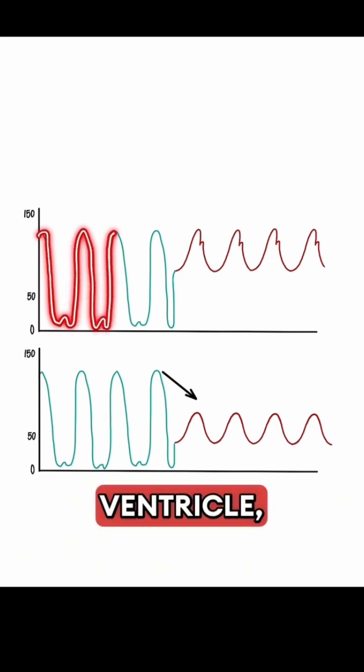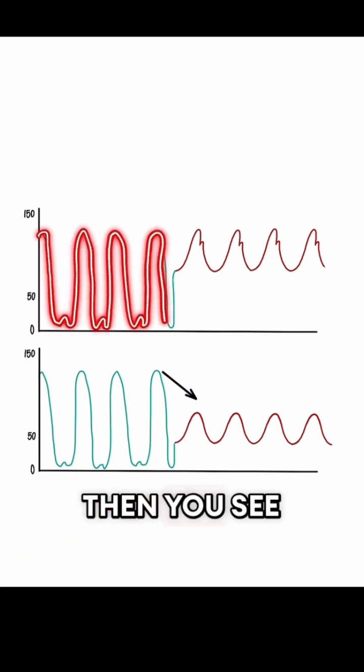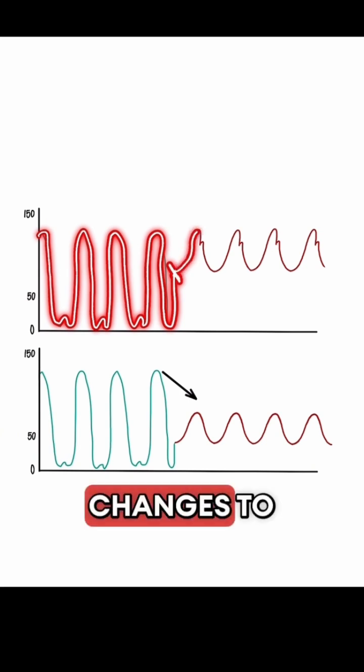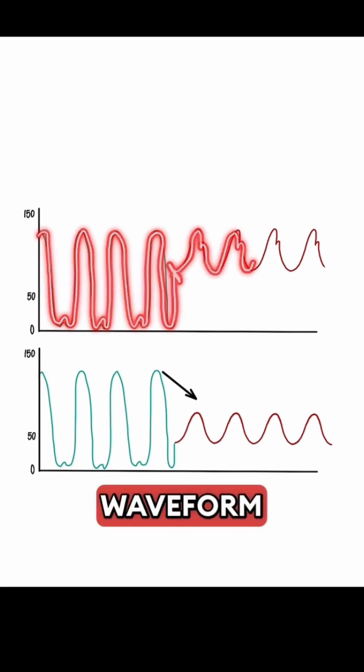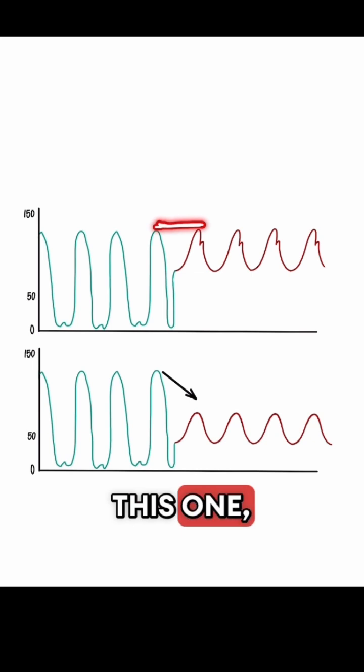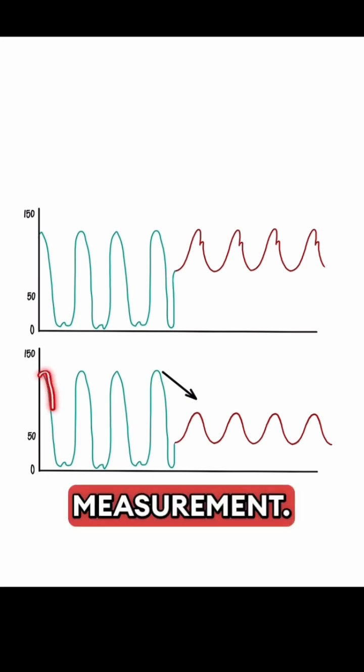So you're in the left ventricle, you record that pressure, then you pull back across the aortic valve and the pressure changes to an aortic waveform like you have here. Now this one, there is no gradient between the two, so this patient does not have aortic stenosis by waveform measurement.